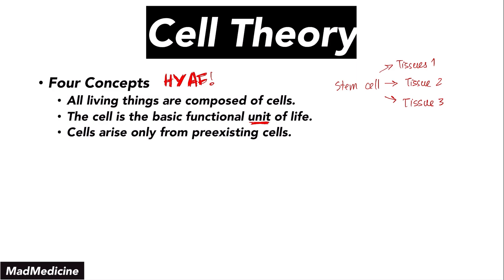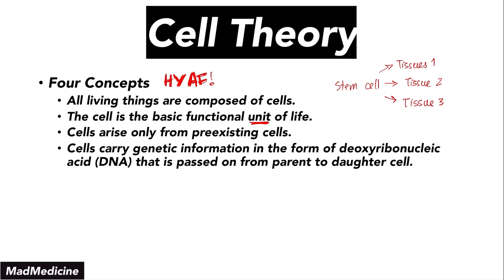And finally, one of the most important parts of this theory is that cells carry genetic information in the form of DNA — deoxyribonucleic acid — that is passed on from the parent to the daughter or replicate cell. DNA is very, very important. We will discuss this concept more throughout this lecture series, but DNA is definitely passed on, especially when the cell is replicating.